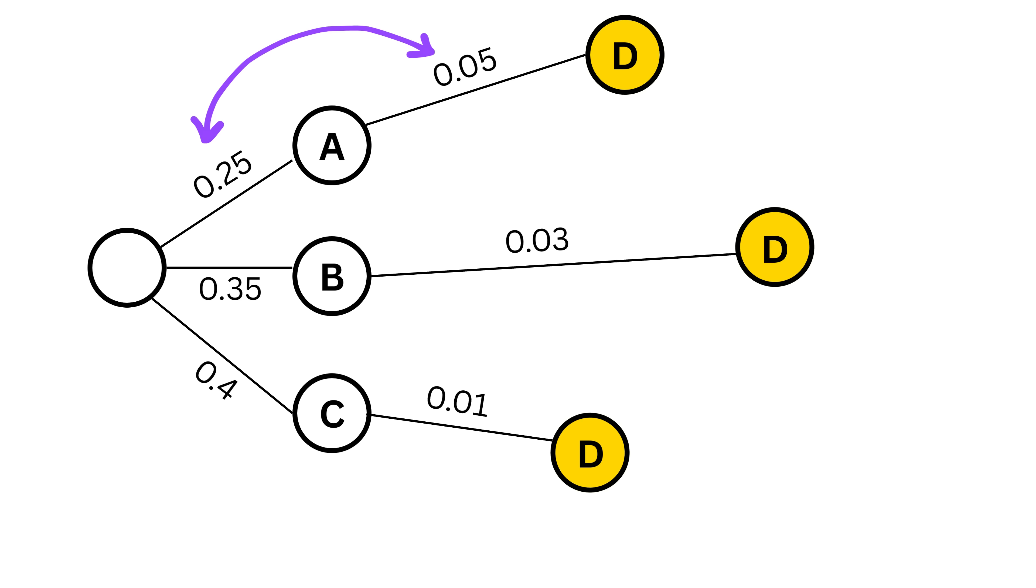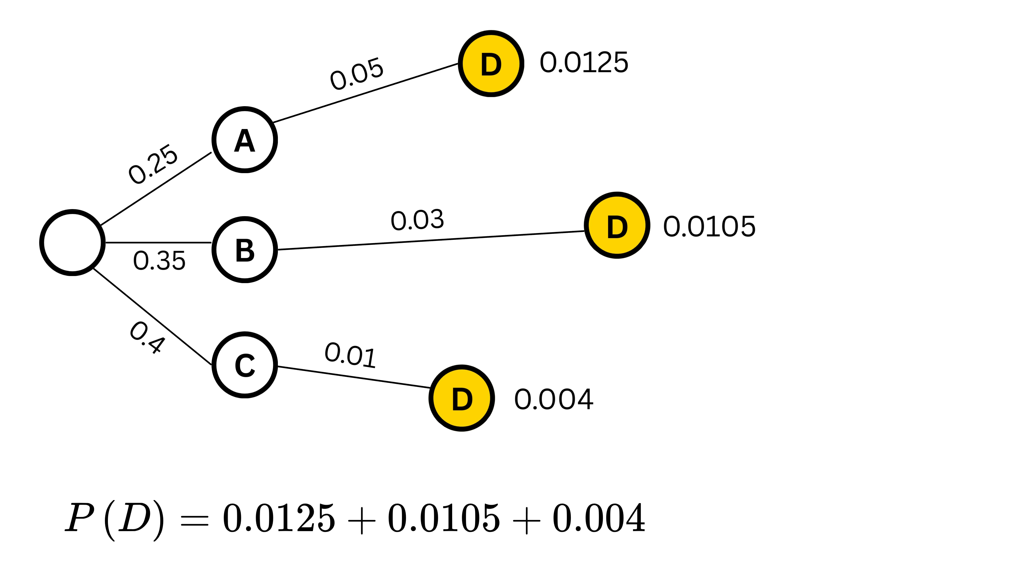So, for A and defective, it is 25 over 100 times 5 over 100, which equals 1.25%. For B and defective, it is 35 over 100 times 3 over 100, which equals 1.05%. For C and defective, it is 40 over 100 times 1 over 100, which equals 0.4%.